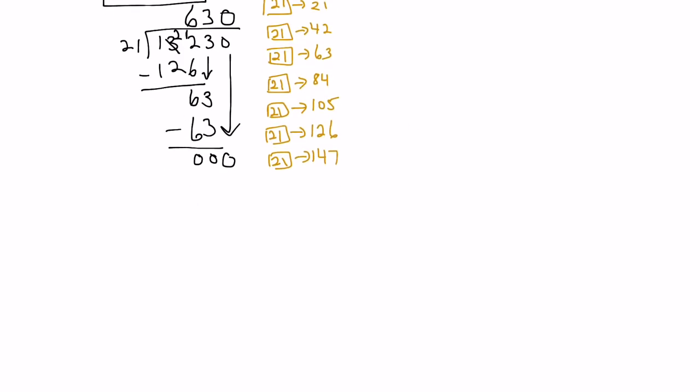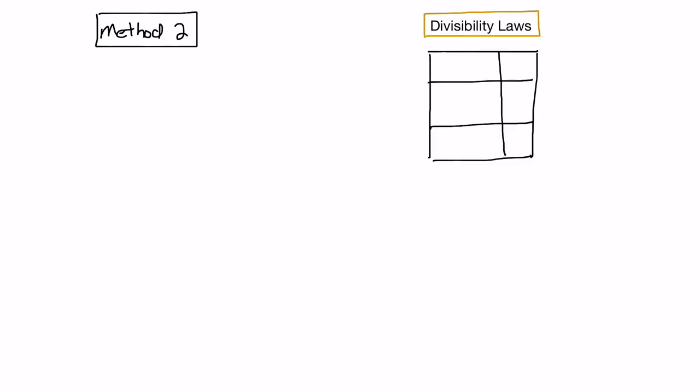Let's look at another method. We're going to look at method number 2, which involves some divisibility laws. If a number is even, then it is divisible by 2. If a number ends in 0 or 5, then it is divisible by 5. And if the sum of a number's digits is a multiple of 3, then that number is divisible by 3.